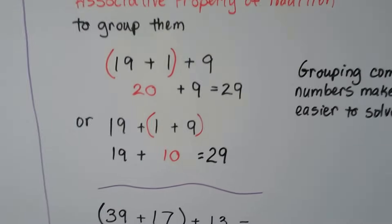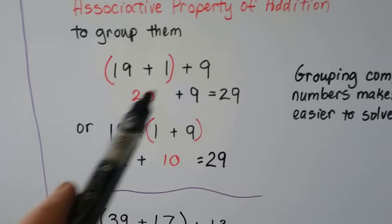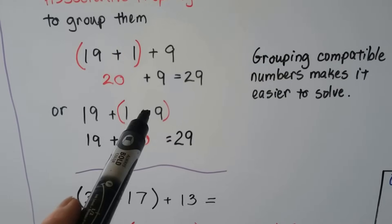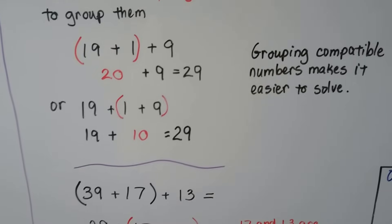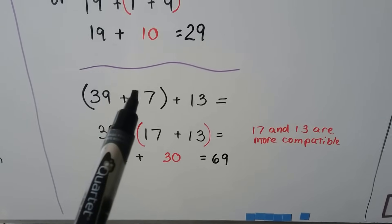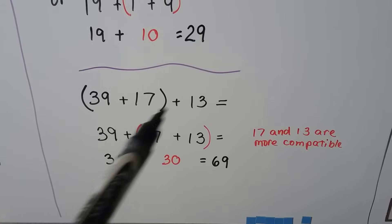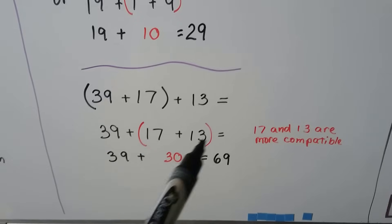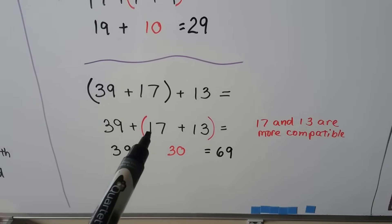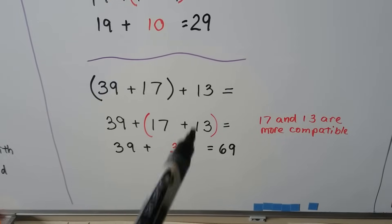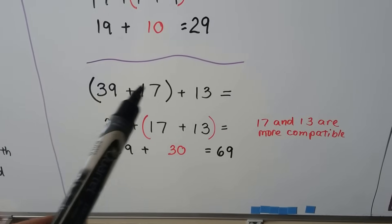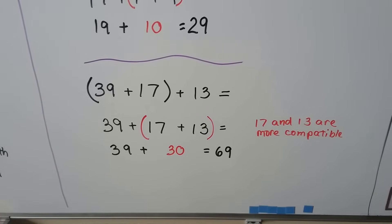We can also use the associative property of addition to group numbers. If the 1 is in the middle, we can group 19 and 1 to get 20, then add 9 to get 29. Or group the 1 and 9 to make 10 and add 19 to get 29. It's easiest when you group compatible numbers. For example, 17 and 13 are more compatible than 39 and 17. Using the associative property to regroup so 17 and 13 are together gives 30, and then adding 39 gives 69.